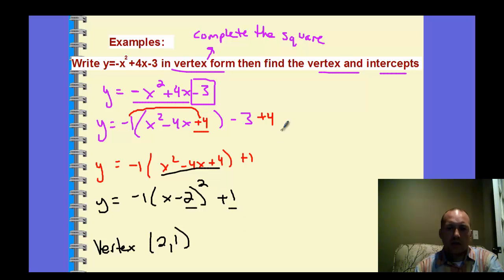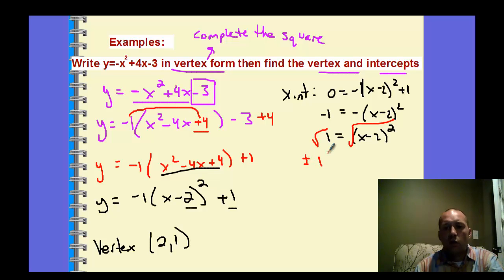Now to find the intercepts. The x-intercept is found by plugging 0 in for y and solving it. So I subtract 1 to both sides. Divide by a negative. Now square root. So you have plus or minus 1 equals x minus 2. Then I can add 2 to both sides. So 2 plus or minus 1 equals x. So 2 plus 1 is 3, or 2 minus 1 is 1. Those are two x-intercepts.